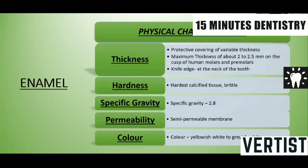The physical characteristics of enamel: the thickness of the enamel is variable. The maximum thickness is about 2–2.5 mm on the cusps of the human molars and premolars, and at the neck of the tooth it is knife-edge. It is the hardest calcified tissue, yet at the same time it is brittle. The specific gravity of the enamel is 2.8 and it is a semi-permeable membrane.